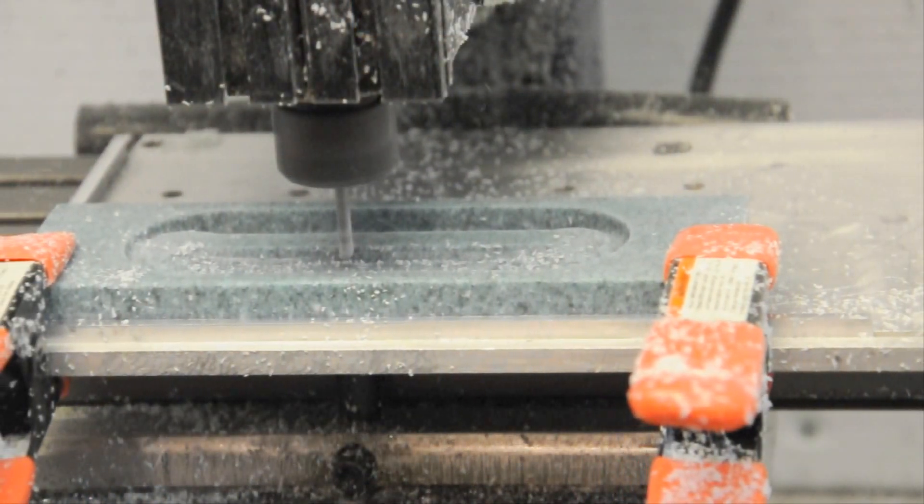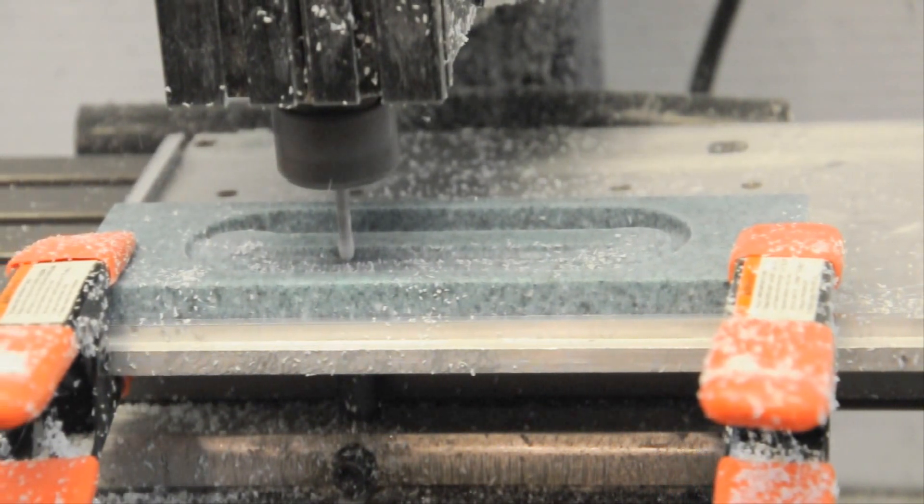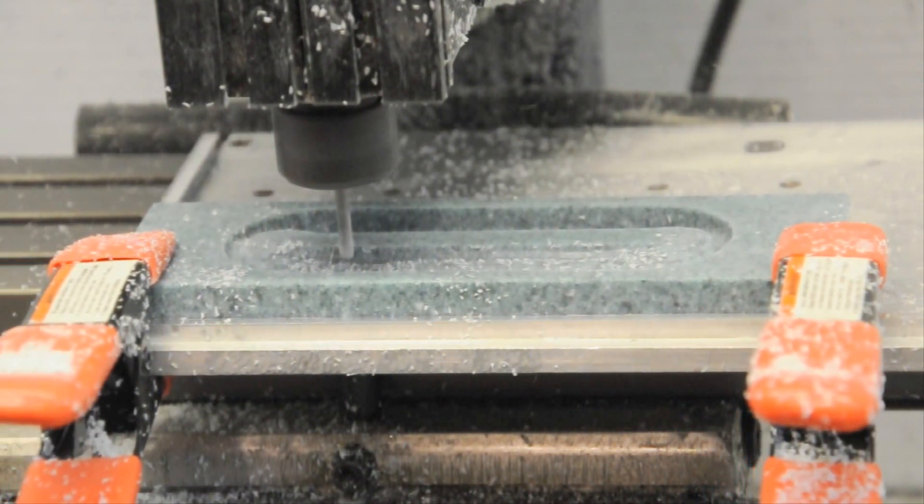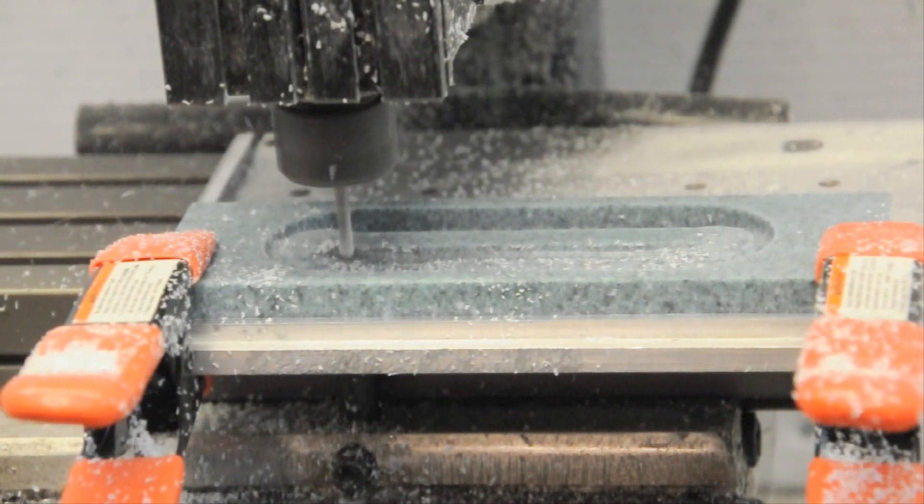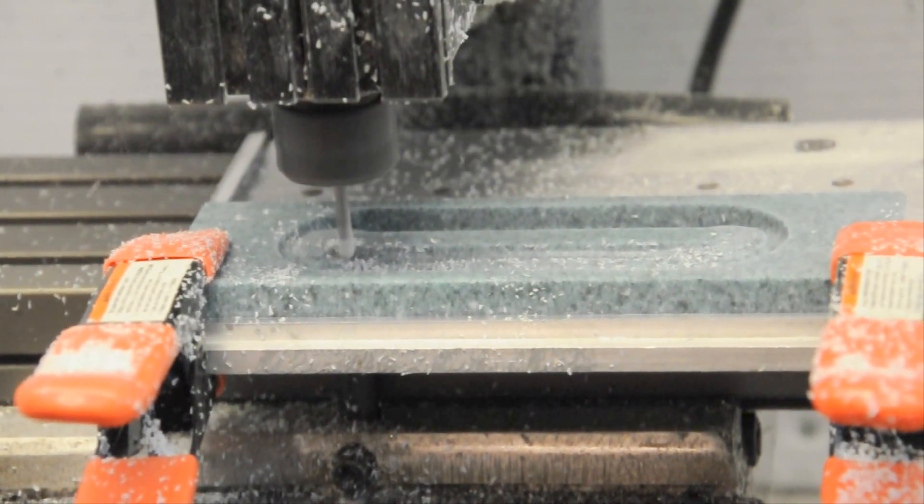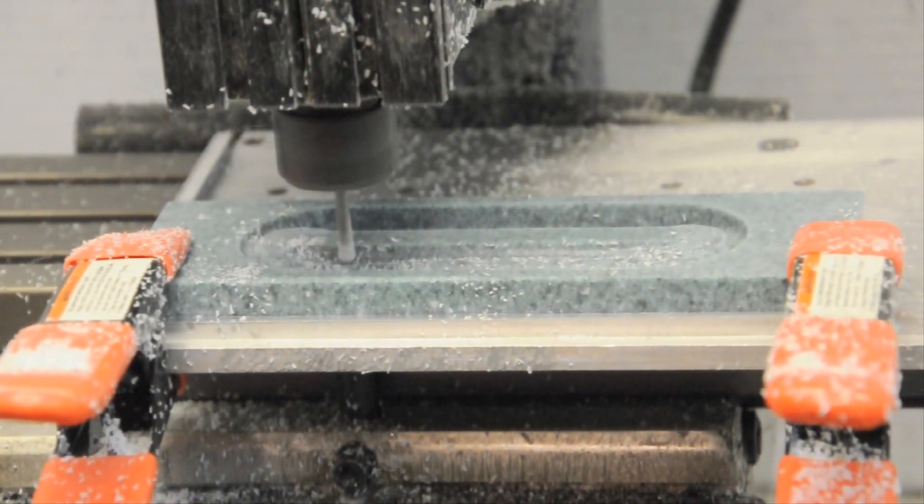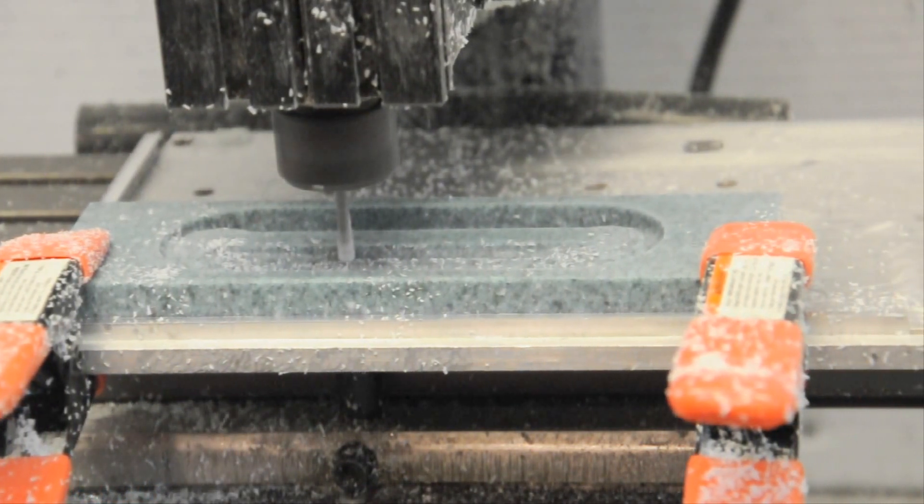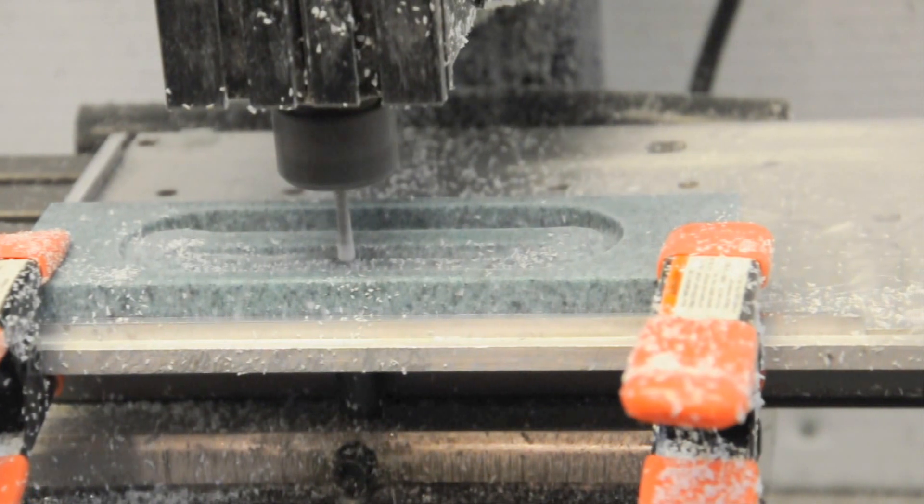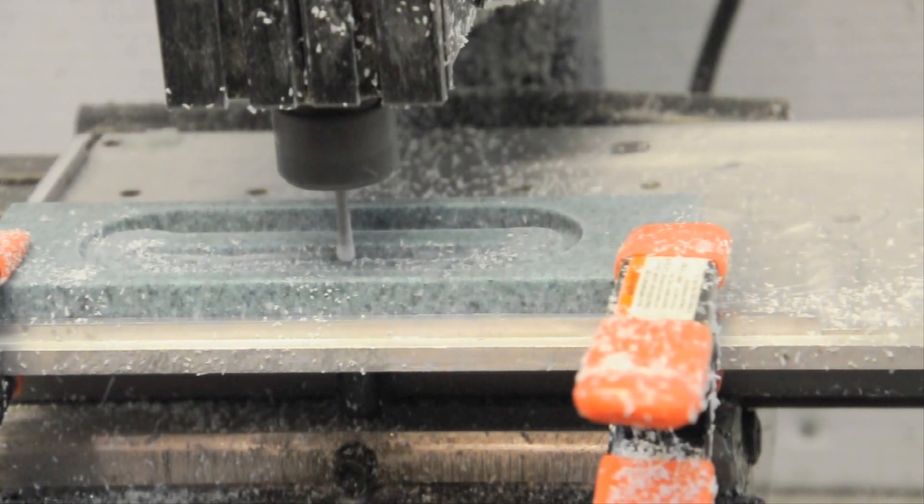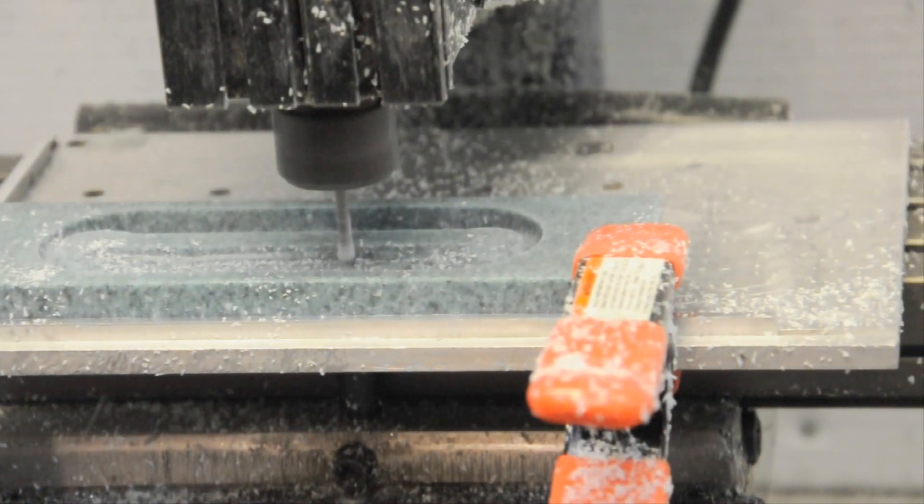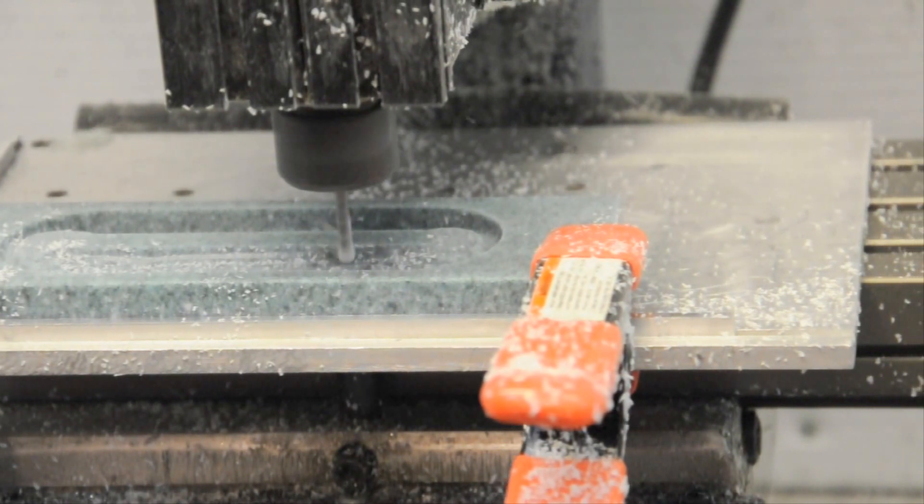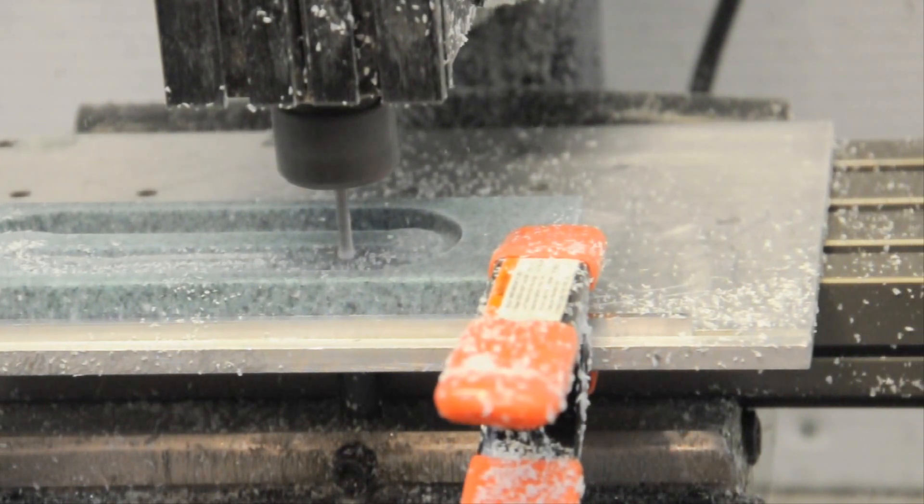While the other CNC machine is milling the mold, machine number two is taking care of the template. Now every mold comes with a custom-made template that's made to the customer specifications, and that allows you to get a consistent shape every time you make a deck. I'll show you what that looks like and how that works later on in the video.